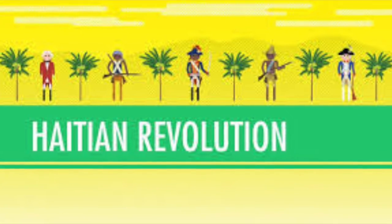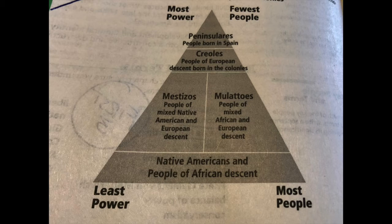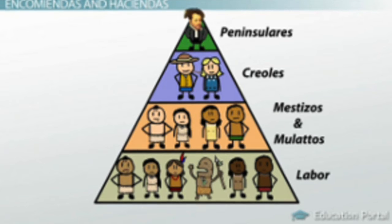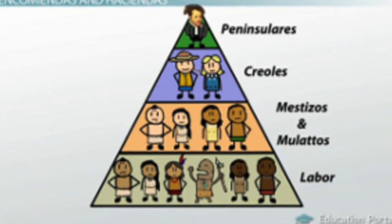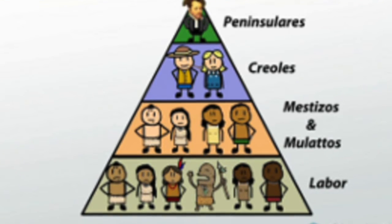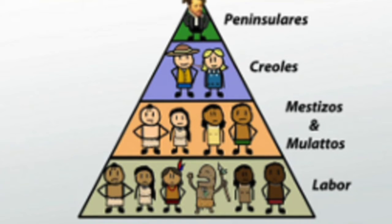If you want to research more about this system and how horrible it was, you can look up anything about the colonization of Haiti. Social classes: a social structure developed that placed people in a hierarchy. The Spanish-born people at the top were known as peninsulares — they're from the peninsula. Spain is on a peninsula with Portugal. Creole was the name given to those of European descent born in the colonies. Mestizos were people of mixed Native American and European descent, and mulatto was a term for those of mixed African and European descent.